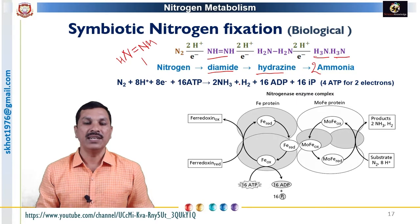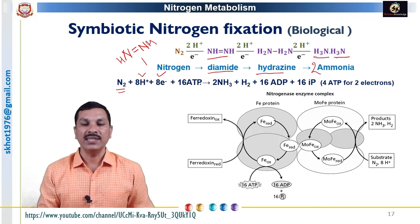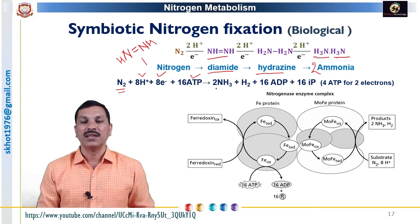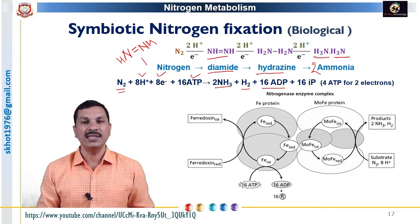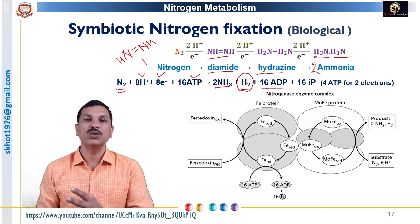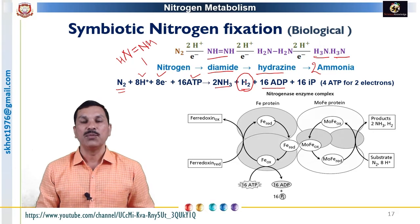The overall process can be written as: nitrogen reacts with eight protons and eight electrons, requiring 16 ATP for fixation of one nitrogen molecule, producing two ammonia molecules plus hydrogen, while 16 ATP are converted to 16 ADP and inorganic phosphate. The excess hydrogen is taken up by the enzyme hydrogenase. In this fashion, molecular nitrogen is fixed in the form of ammonia.